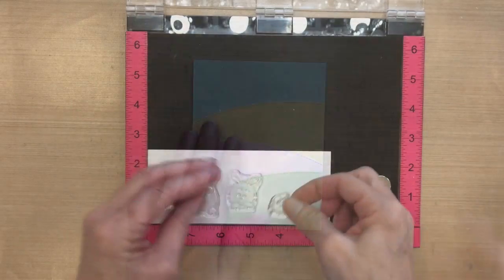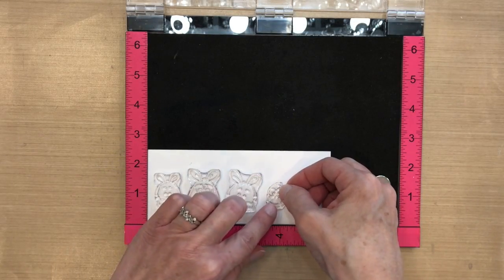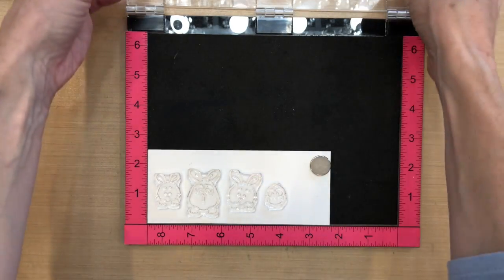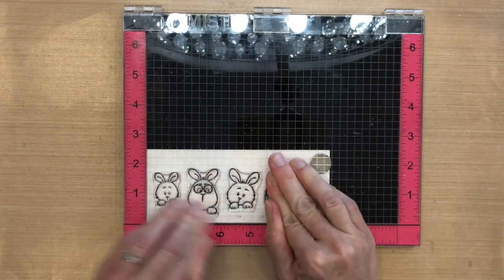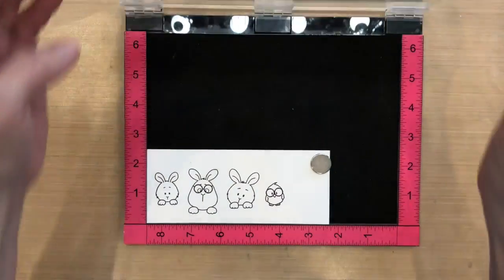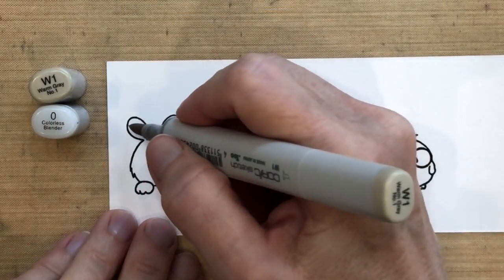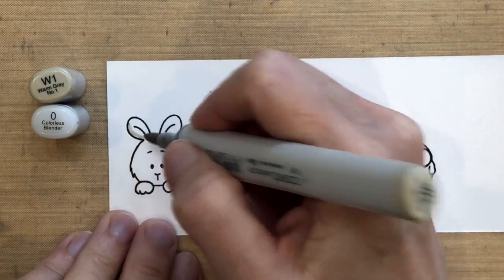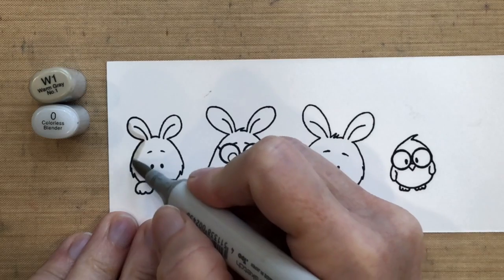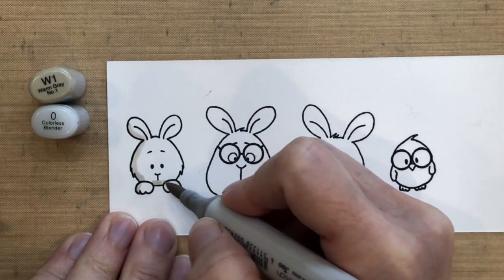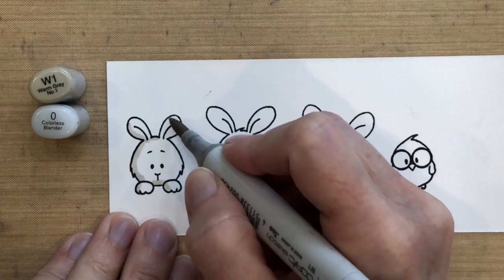Okay, now I'm going to do my stamping. I'm going to stamp them all at the same time in Memento Tuxedo Black ink. I'm going to be using Copic markers and I'm going to do some really quick coloring. I like when I have white animals because they're so easy to color. So I have W1 and I'm going to go all the way around the edges of this bunny. This is real time, so it's really super fast.